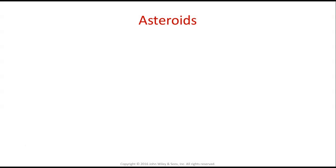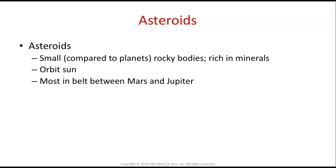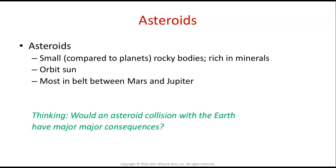Let's finish up talking about asteroids, comets, and meteors. Asteroids are small compared to planets but still quite large — large enough to land little spacecraft on. They're rocky bodies rich in minerals that orbit the sun, and most are found in the asteroid belt between Mars and Jupiter. Would an asteroid collision with Earth have major consequences? Maybe you're thinking of the dinosaurs — it's one of the theorized reasons dinosaurs are no longer with us, and there is very solid evidence for that. The asteroid kicked a bunch of sediment and dust into the air, pretty much blocking out the sun, causing the death of not just the dinosaurs but the organisms they ate and the plants those organisms ate. If that happened today, catastrophic failure would occur.